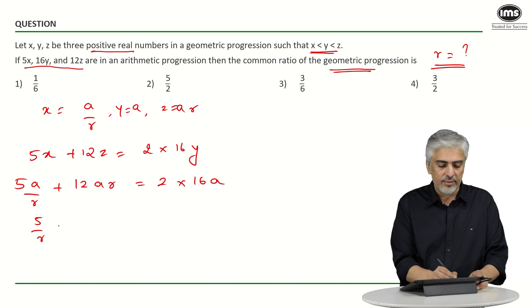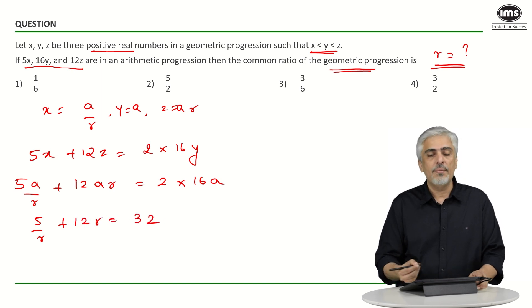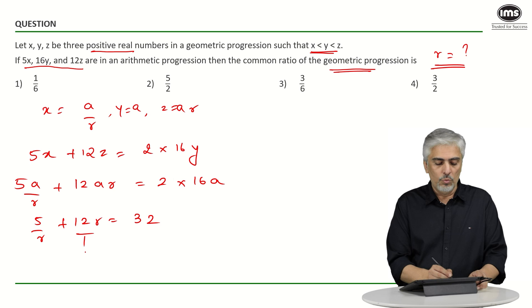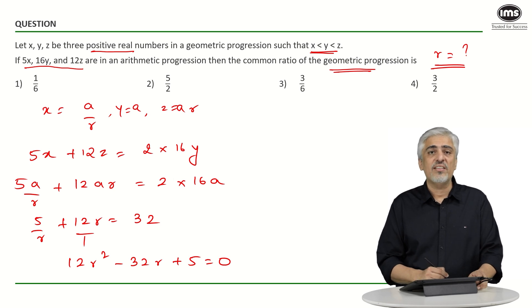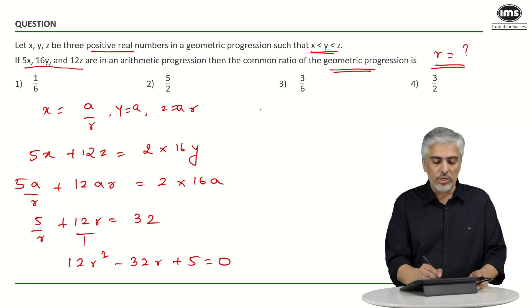You can see we can take a common on both sides and a will cut out. So I'll be left with 5 upon r plus 12r equals 32. Make a quadratic out of this. You get 12r squared minus 32r plus 5 equals 0. Very easy factors, the factors are 30 and 2.